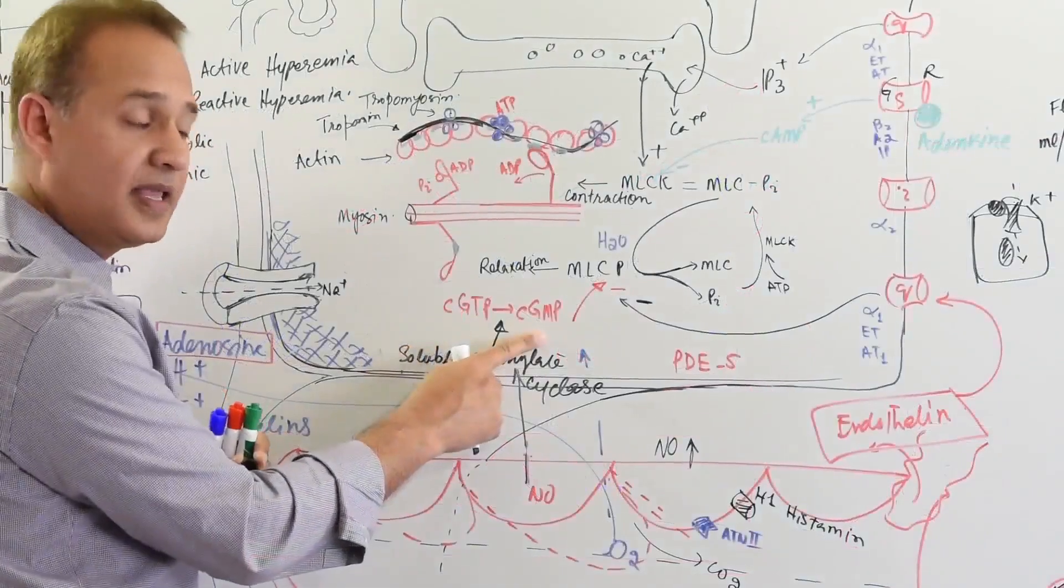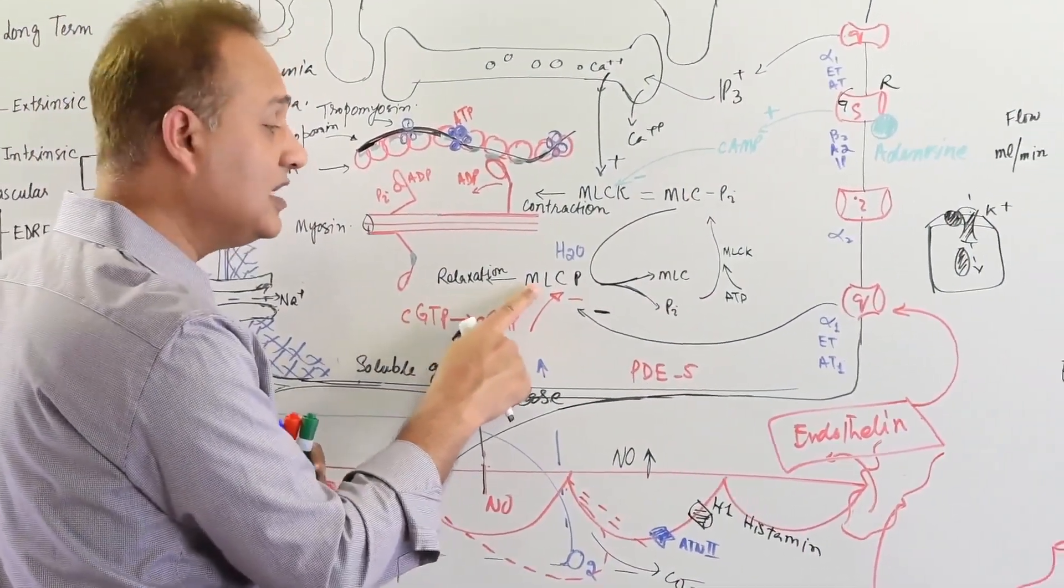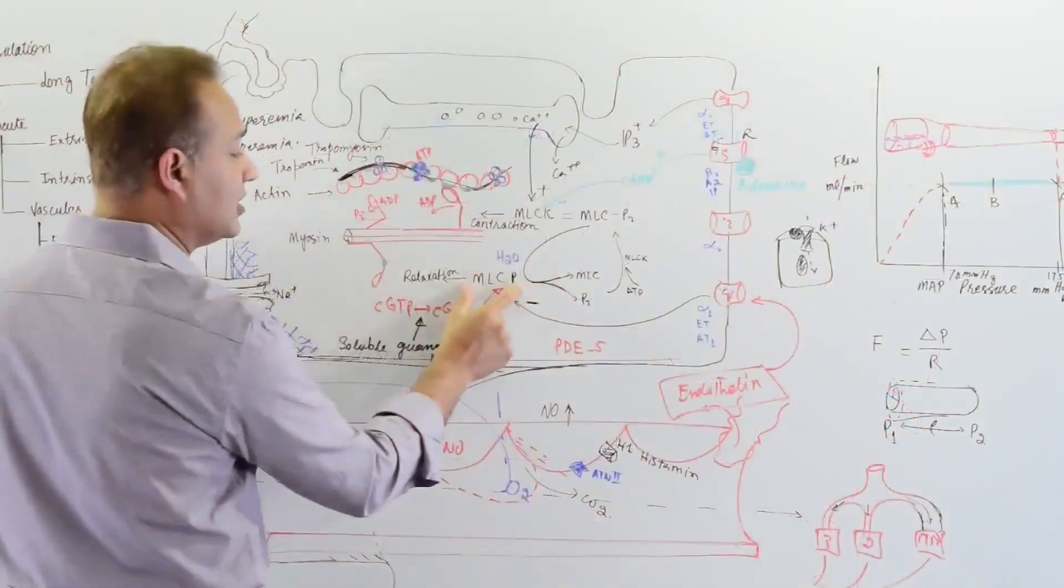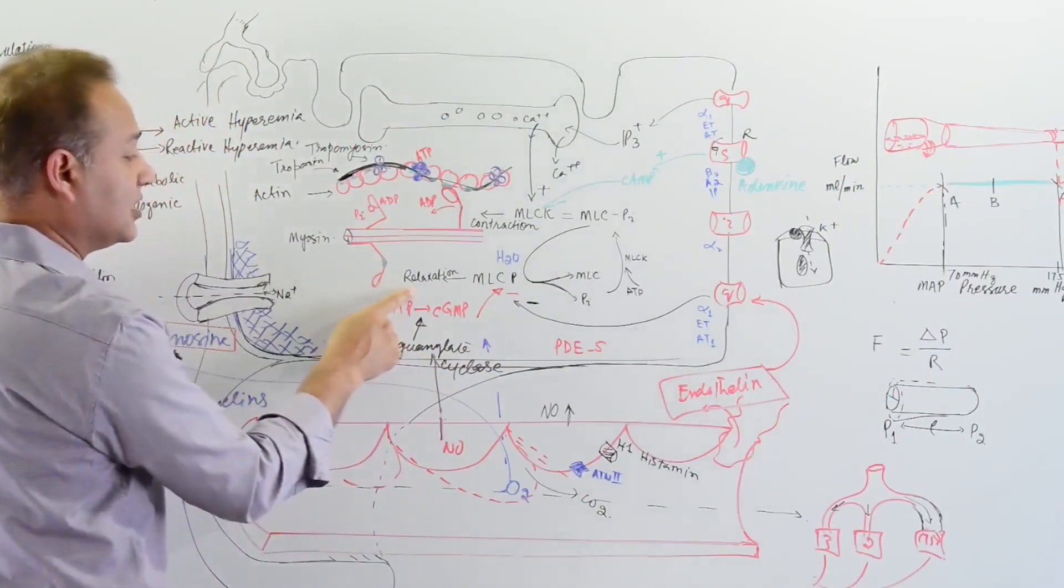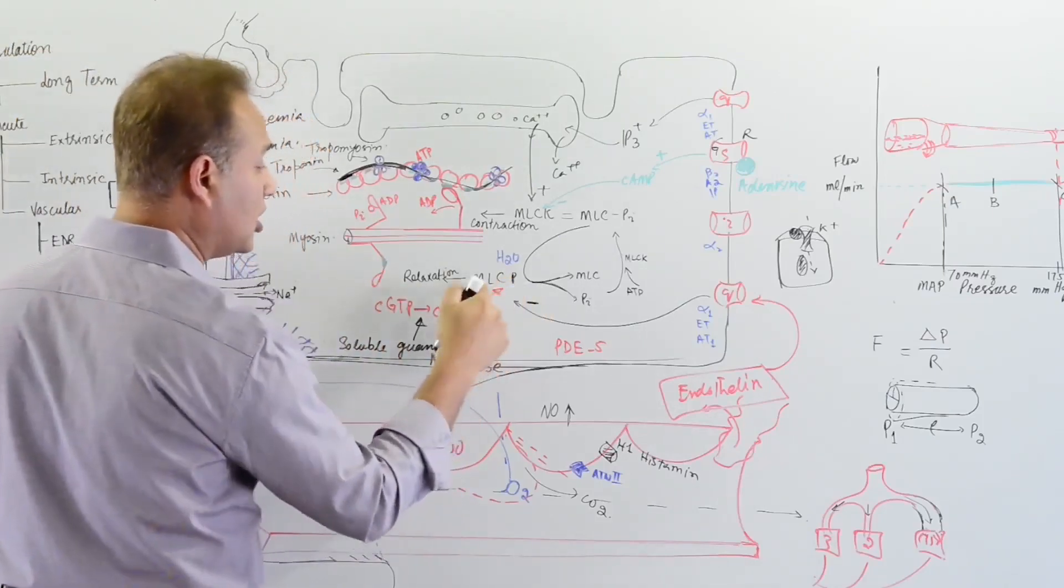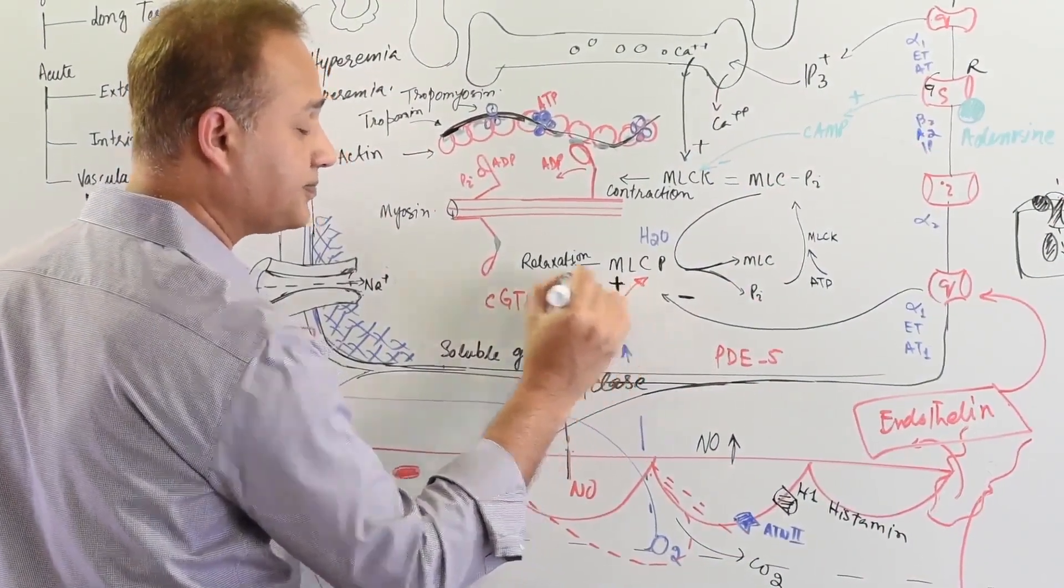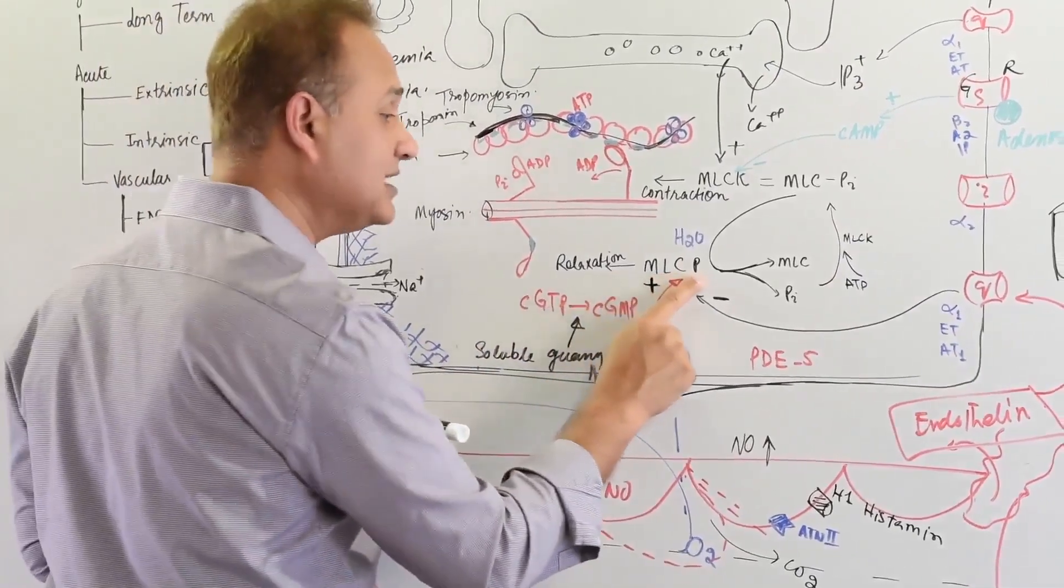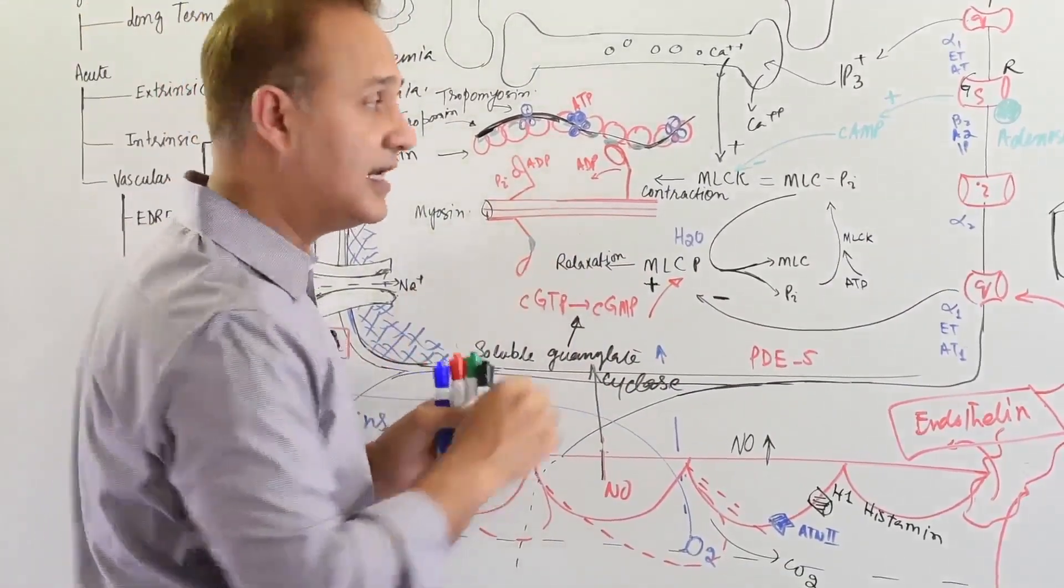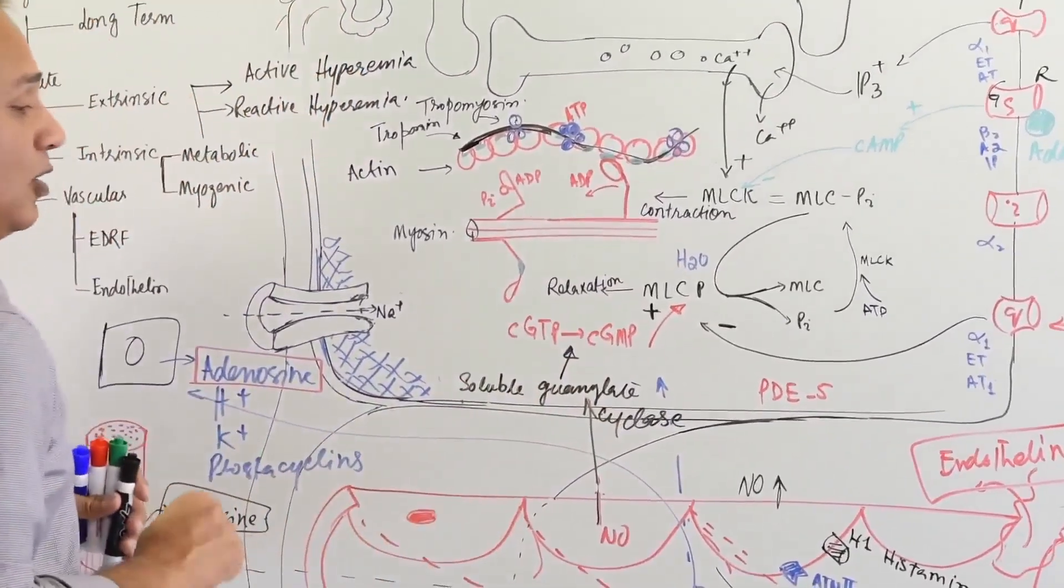When there is more cyclic GMP, that increased cyclic GMP causes MLCP to be increased. The function of this enzyme is to cause relaxation. So when the MLCP function is increased, the myosin and actin binding will reduce, and that would cause relaxation.